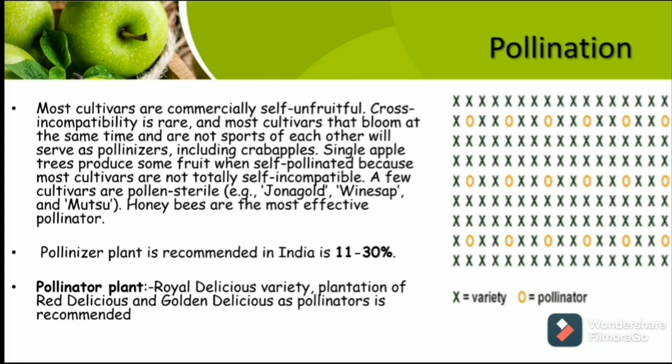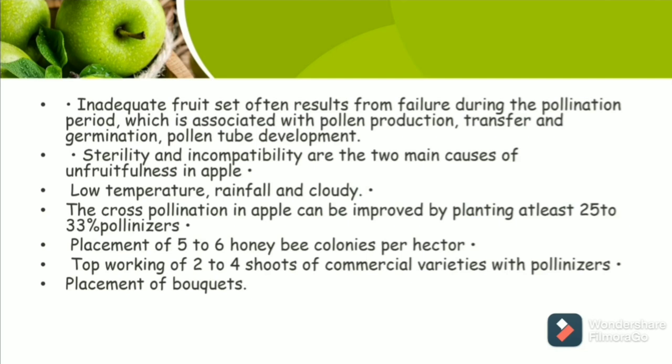A single apple tree produces some fruit while some self-pollination occurs because cultivars are not totally self-incompatible. A few cultivars that are pollen-sterile are Jonagold, Winesap, and Mutsu. Honeybees are the most effective pollinators. Pollinizer plant percentage recommended in India is 11 to 30%. Pollinizer varieties include Royal Delicious, Red Delicious, and Golden Delicious. Inadequate fruit set often results from failure during the pollination period, which is associated with pollen production, transfer, germination, and pollen tube development. Low temperature, rainfall, and cloudiness also affect pollination.